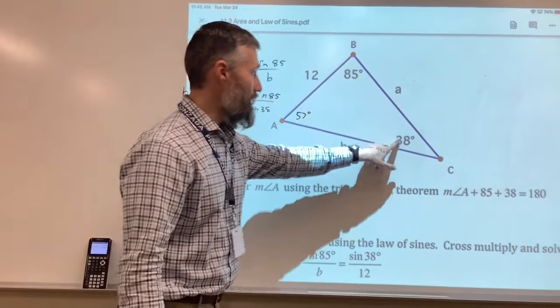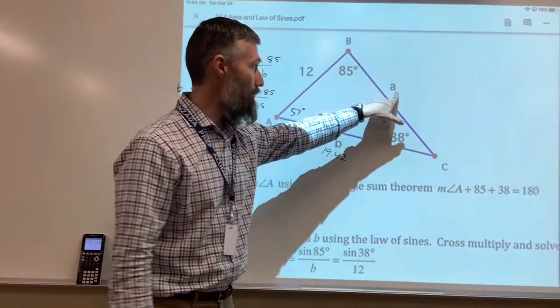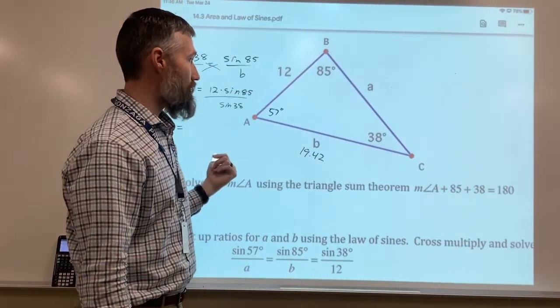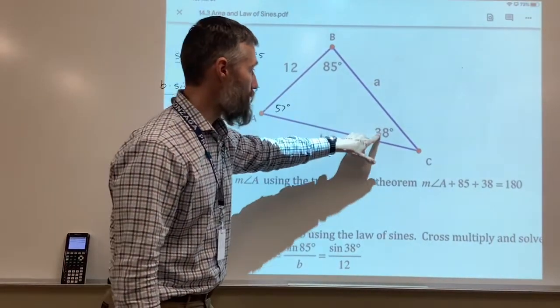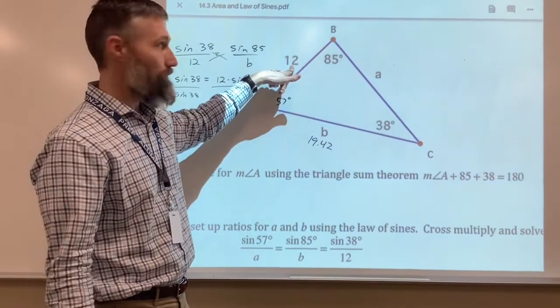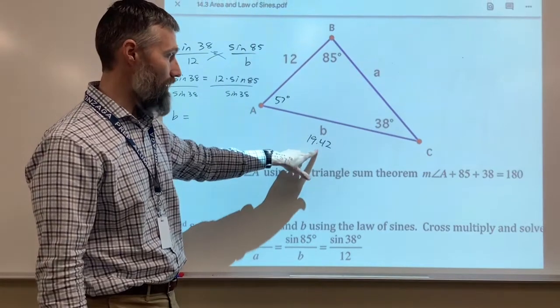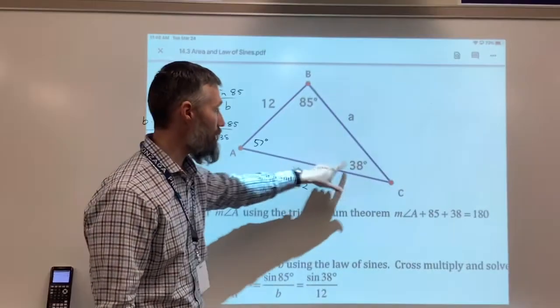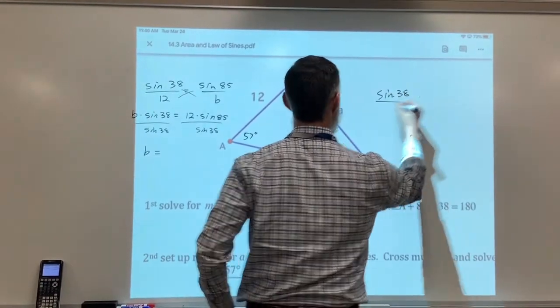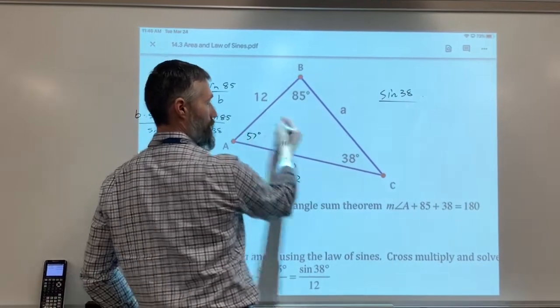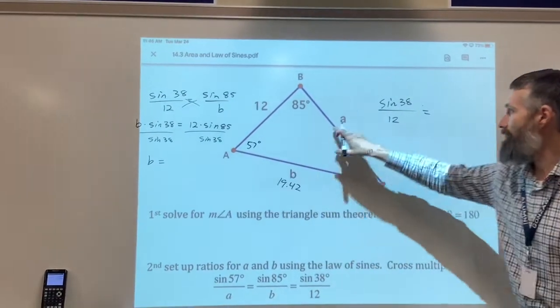So now we have an angle opposite side, angle opposite side, angle, and not opposite side. So we need to use the law of sines once again to solve for this side. I'm going to use my 38 and my 12, because those are easier numbers to work with. I could use my 85 and my 19.42, but as we saw, that 19.42 is rounded. So I'm going to use the solid numbers that I have. I've got the sine of 38 over 12 equals the sine of 57 over A.